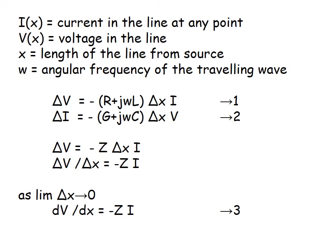Similarly, the decrementing current ΔI is negative of (G + jωC)·Δx times V. Replacing R + jωL with Z and rearranging, we get ΔV/Δx = −Z·I. As the incremental element Δx tends to zero, it becomes a differential element, so the equation becomes dV/dx = −ZI.